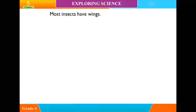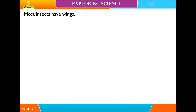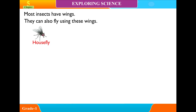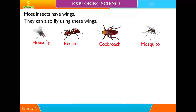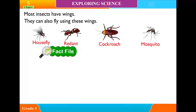Earthworms are an example. Most insects have wings and can also fly using these wings. Examples of insects include House fly, Red ant, Cockroach and Mosquito.